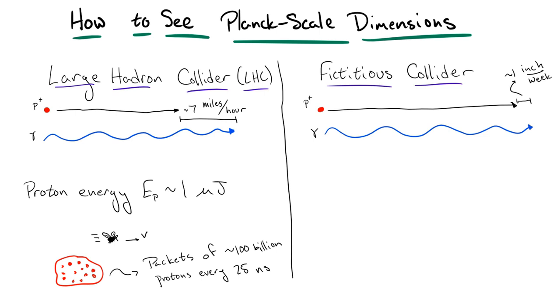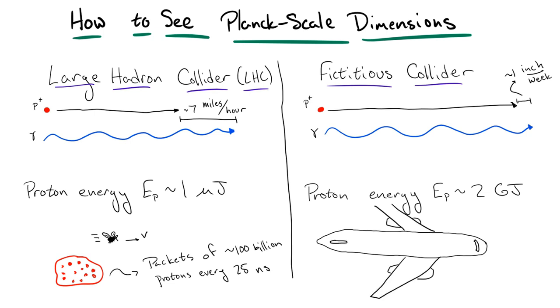However, that's nothing compared to what would be necessary for our fictitious collider. To be able to see the Planck scale, the individual protons would need at least an energy of about 2 gigajoules, which is approximately the same amount of kinetic energy as a Boeing 737 at cruising speed of 550 miles per hour. All of this energy has to be tied up into a single proton, and presumably we would need billions of these protons to even hope of getting a usable measurement of the extra dimensions. So, we are very, very far away from being able to glimpse extra dimensions as small as the Planck length.